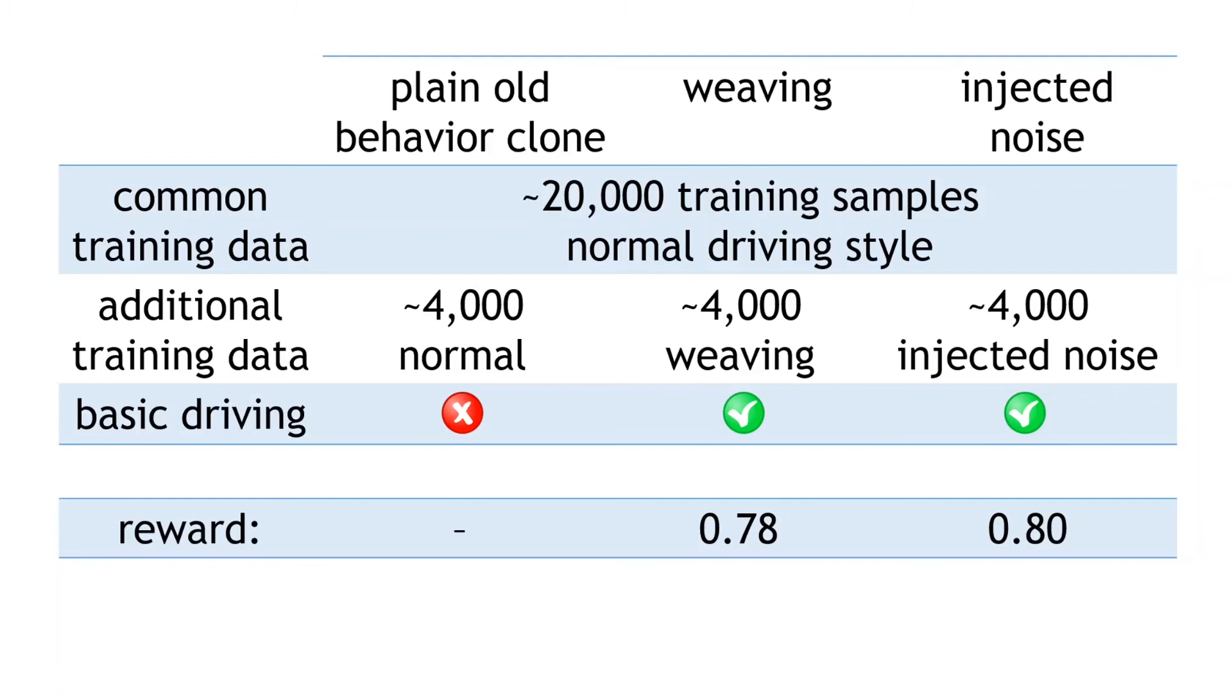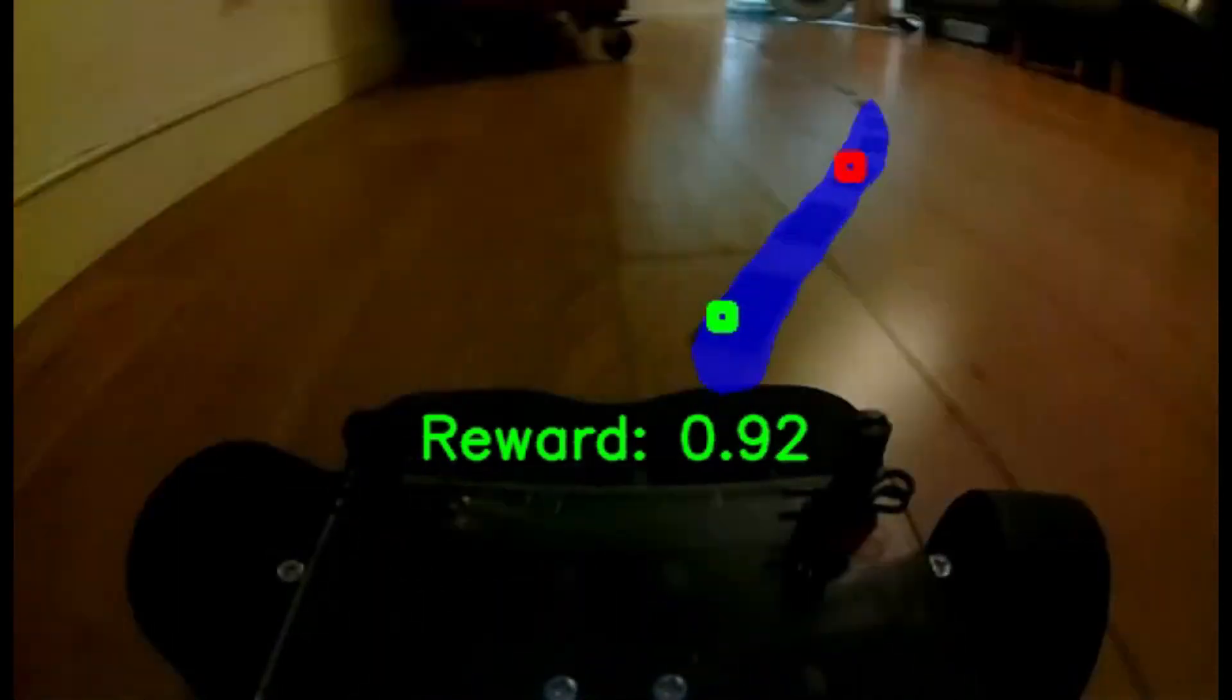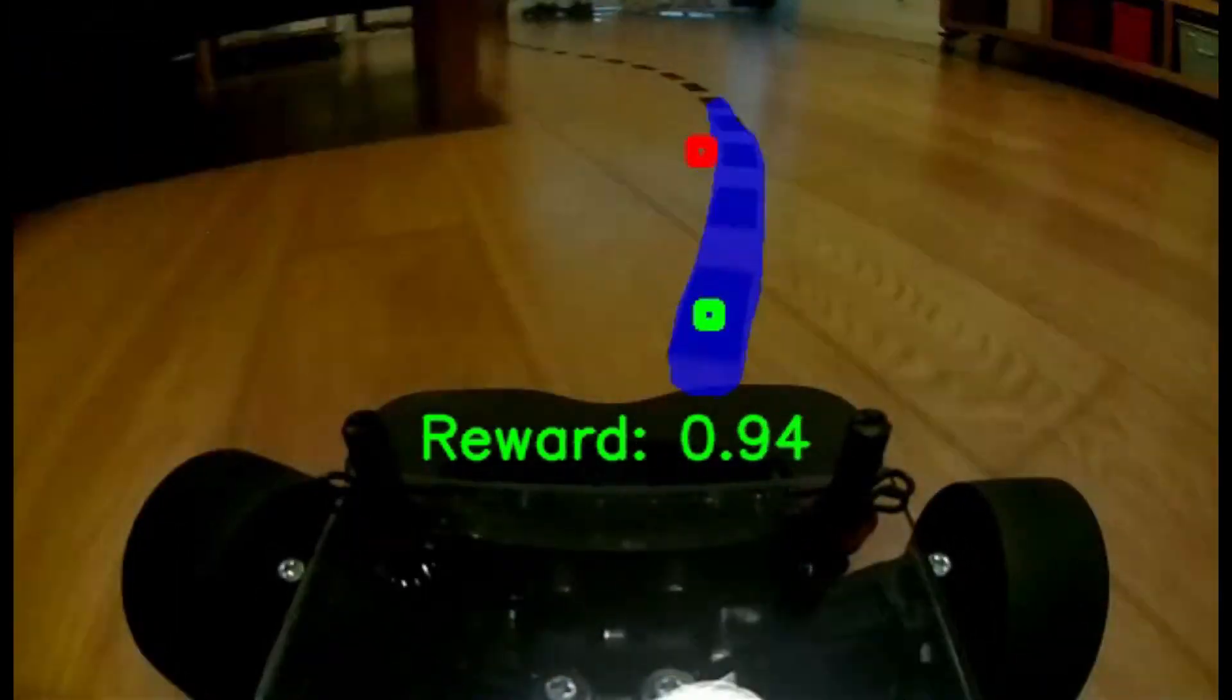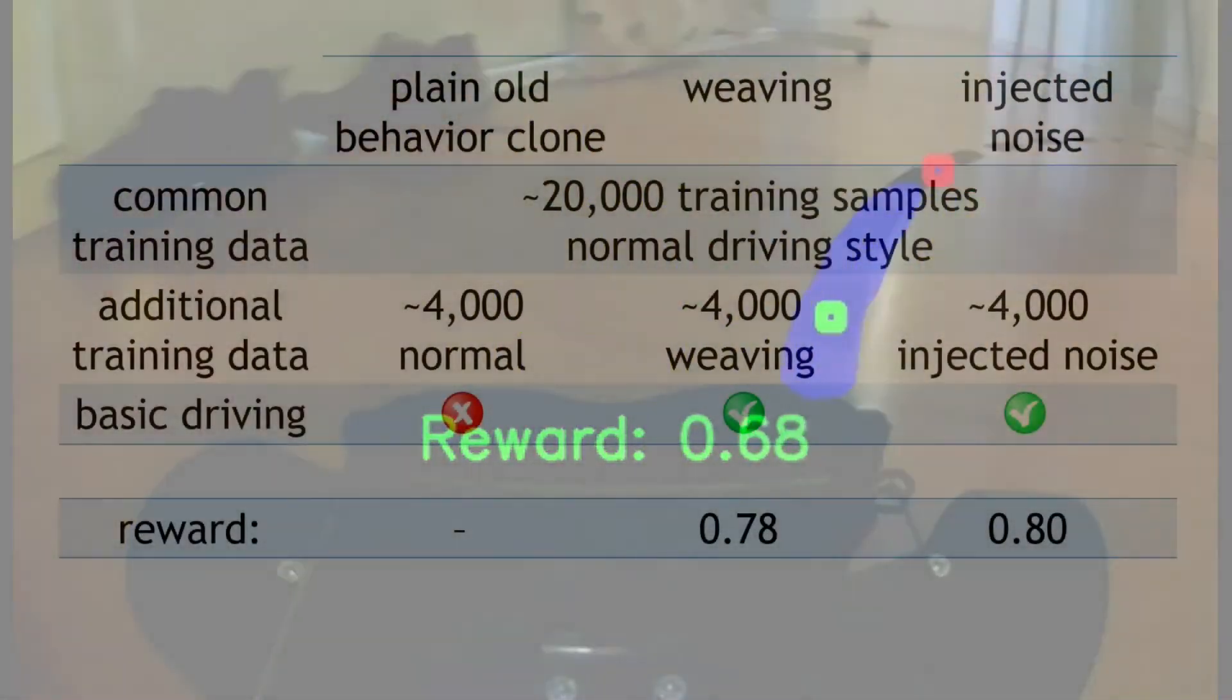So how good are these autonomous drivers? Well, the good thing with this reward metric is that we can also apply it to the images recorded whilst I was driving. So taking the car for a manual spin on the same circuit. And my results? I come in with an average reward around 0.85.